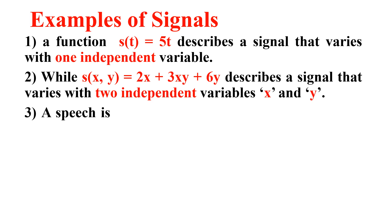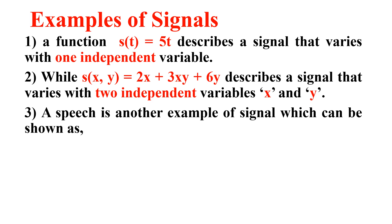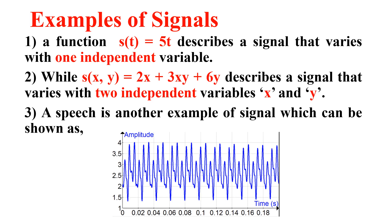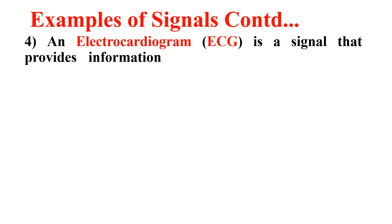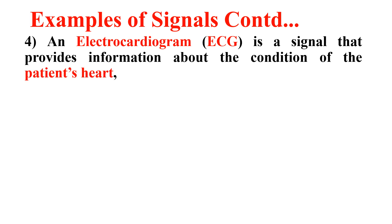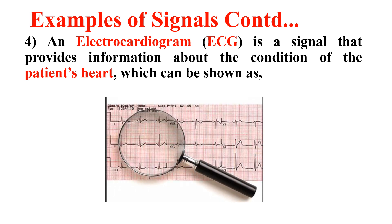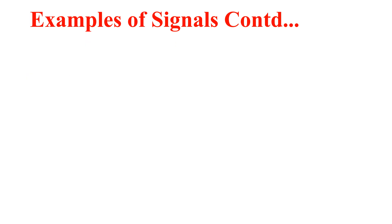The third example: speech is another example of a signal, which can be shown as a graph of amplitude versus time. Moving further, the fourth example: an electrocardiogram, that is ECG signal, is a signal that provides information about the condition of the patient's heart, which can be shown as a graph — this is an ECG signal.